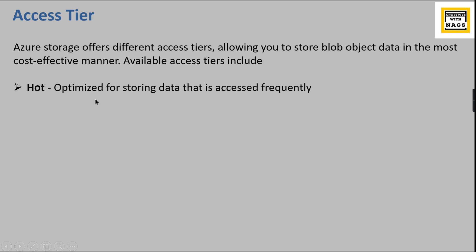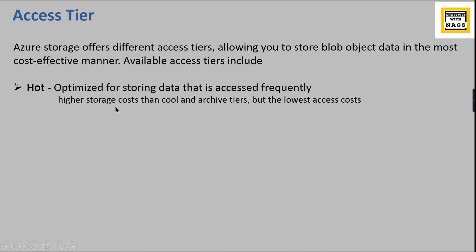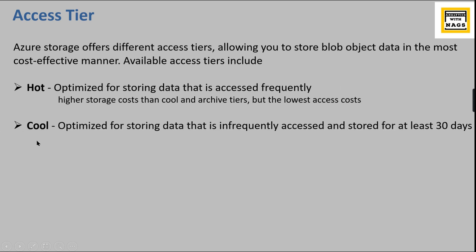Hot tier is optimized for storing data that is accessed frequently. It involves the highest storage cost compared to the Cool and Archive tiers, but the lowest access cost. So here the storage cost will be higher but the access cost will be lower.